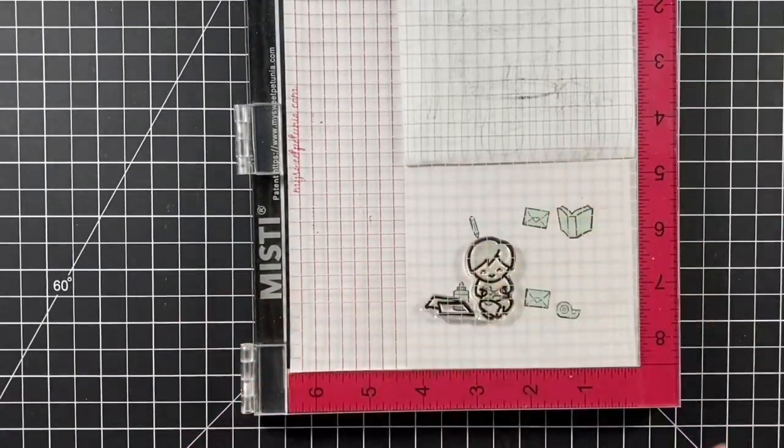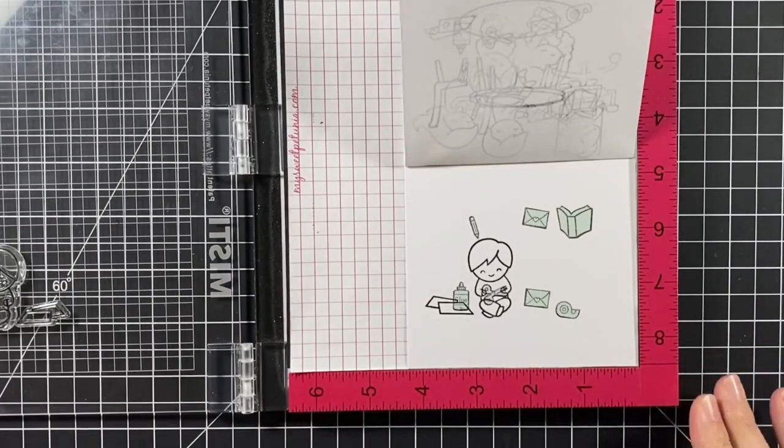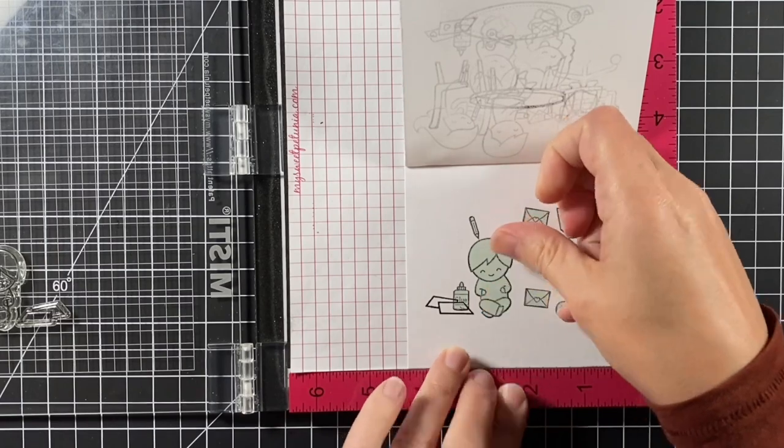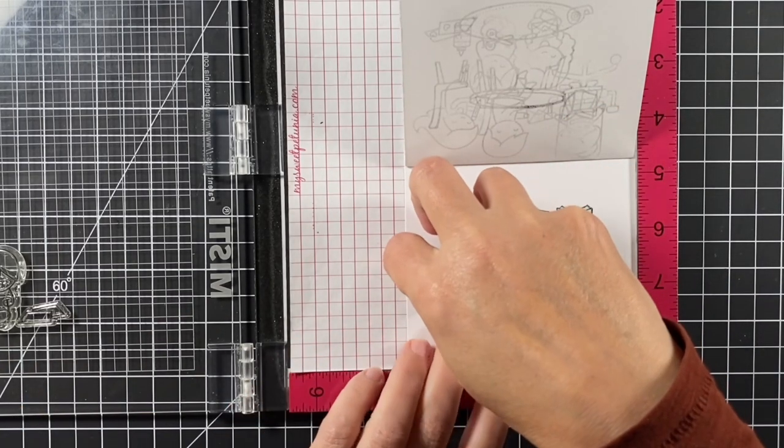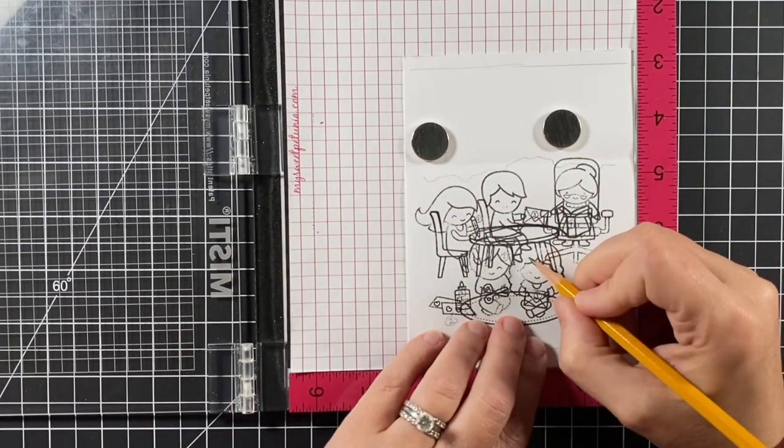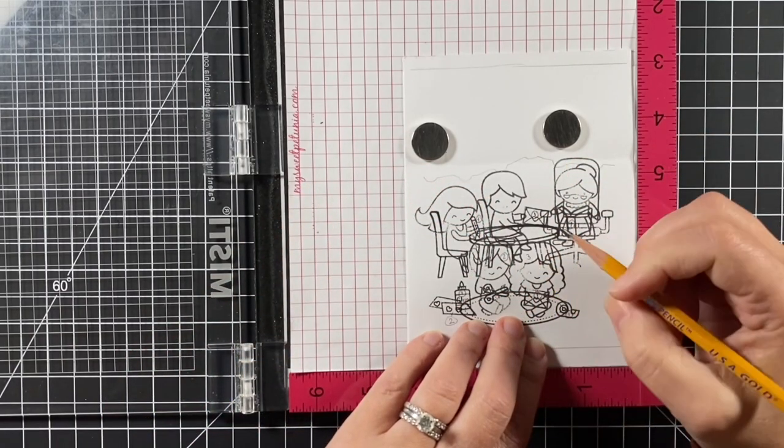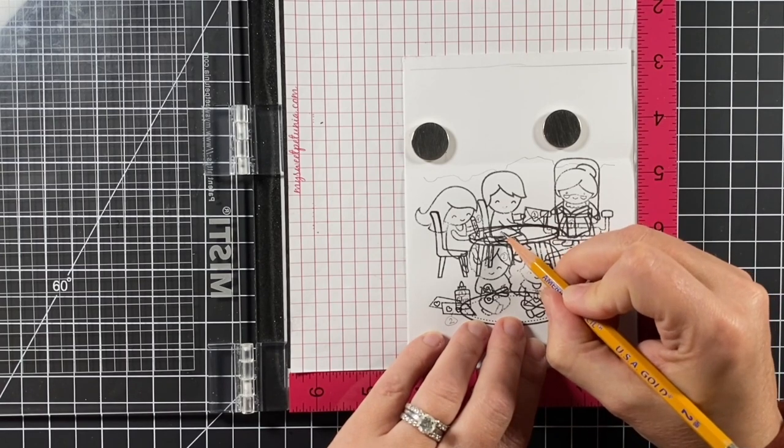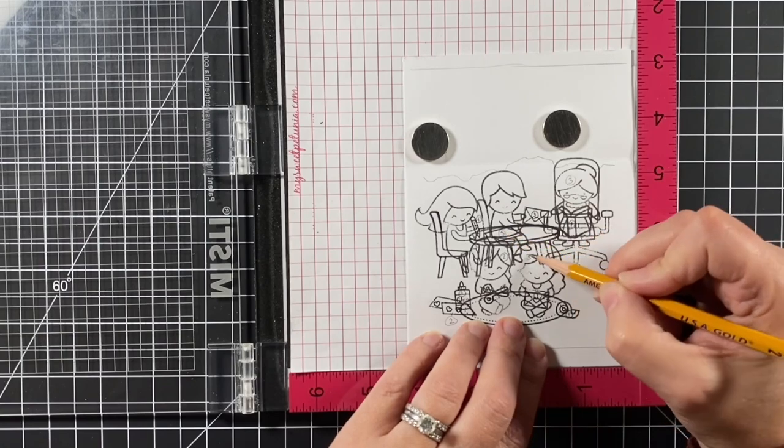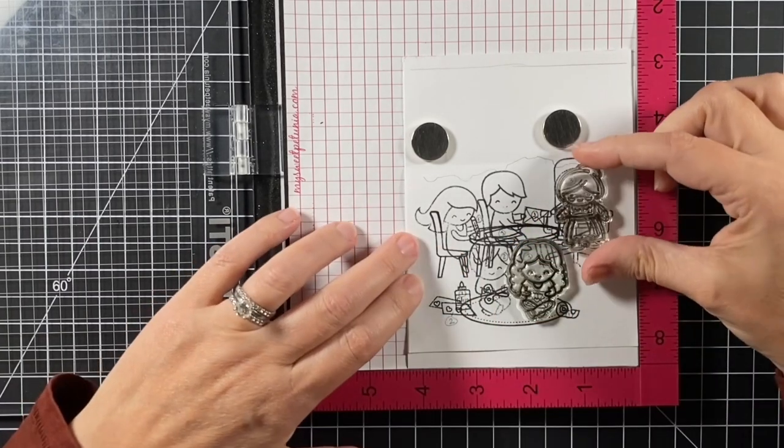If you didn't like to mask then you could just make this scene by stamping all the images, cutting them out with the coordinating dies and layering them on top. But I thought this would be a fun technique to share.